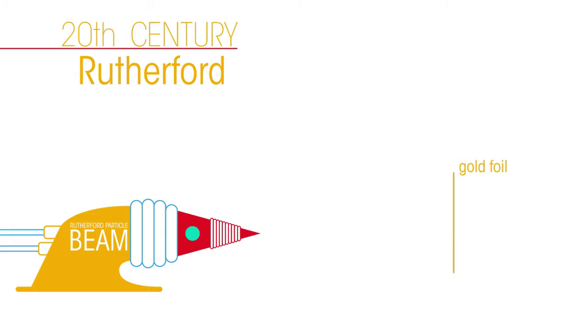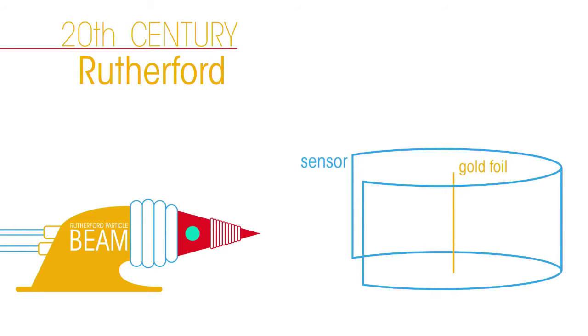If the alpha particles got through the foil, it would be detected by a sensor. Assuming Thompson's plum pudding model was correct, they expected all alpha particles would pass through the gold foil and be detected on the other side. However, while some did show this behavior, others emerged at unexpected angles and some even deflected back to the alpha particle emitter, never passing through the foil.